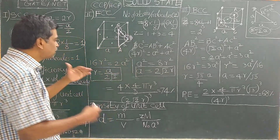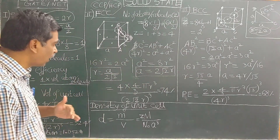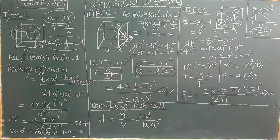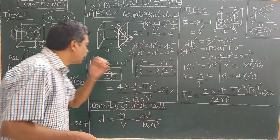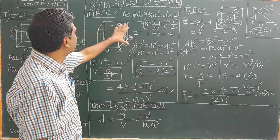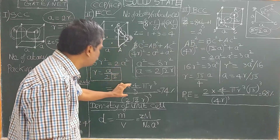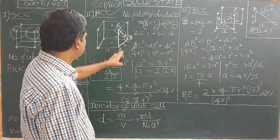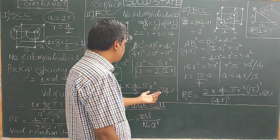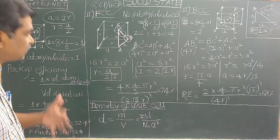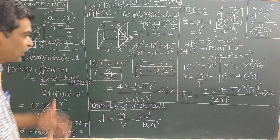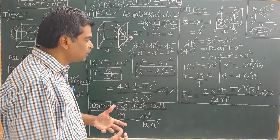R equals A divided by 2√2. If you are given the radius of the atom, you can calculate A, and from A you can calculate the density of the unit cell. Packing efficiency for FCC is the highest — 74%. The void fraction is only 0.26, or 26%, so most of the unit cell is occupied by atoms.